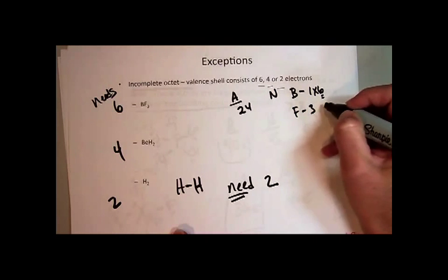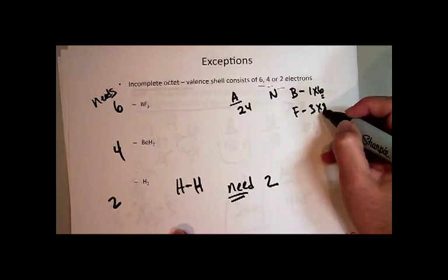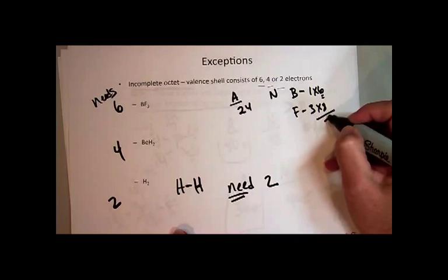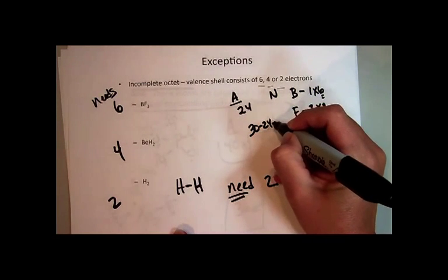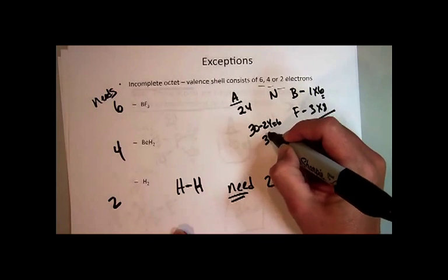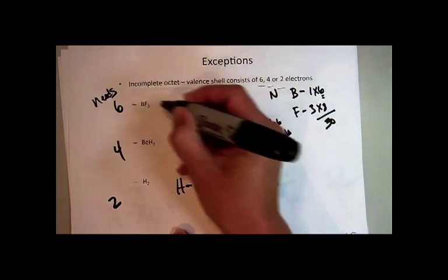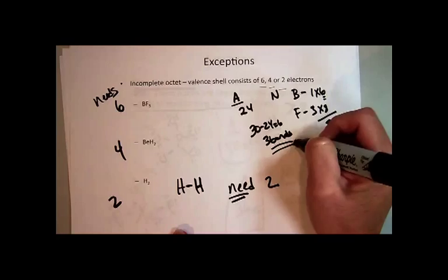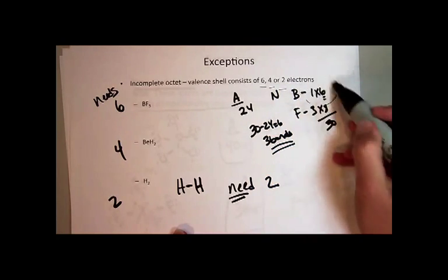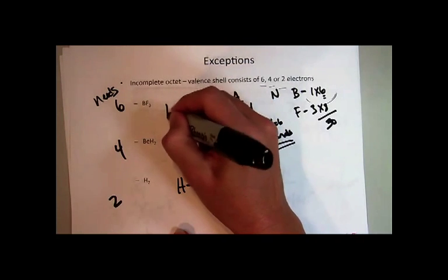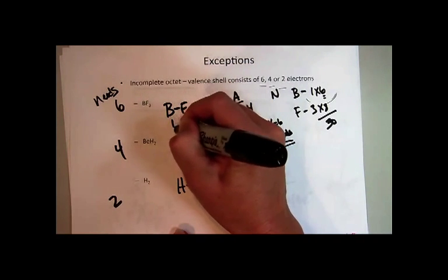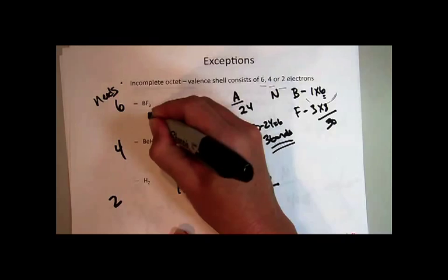Fluorine, there's three of them. It still needs eight. So the total number of needed here is going to be 30. And so when you do your bonding, 30 minus 24 equals six. So that's going to predict three bonds for this particular structure, which is the correct prediction when you use the correct number of needed. So you have to remember that boron only needs six. And so then you're going to come up with a structure like this.